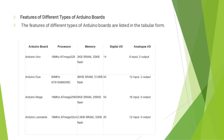Features of different types of Arduino boards. The features of Arduino UNO: it contains 16 MHz ATmega328, memory size is 2 KB SRAM and 32 KB flash, Digital Input/Output is 14 and Analog Input is 6. For Arduino Mega, the memory size is 8 KB SRAM and 256 KB flash, with 54 Digital Input/Output and 16 Analog inputs.